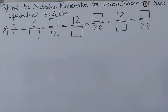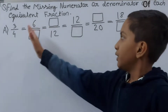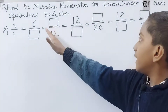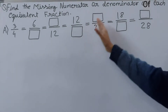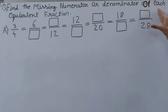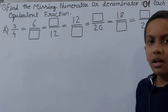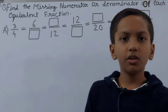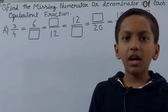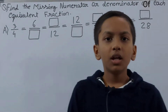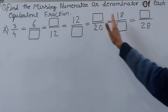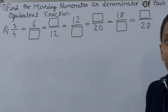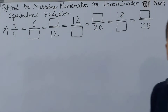Let's see the first question. It says: find the missing numerator or denominator of each equivalent fraction. We have 3/4 equal to 6/□, then □/12, then 12/□, then □/20, then 18/□, and then □/28. These fractions are all equivalent fractions of 3/4, but some are missing the numerator and some are missing the denominator. We have to fill a number in each box that makes the fraction equivalent to 3/4.